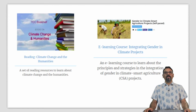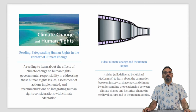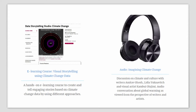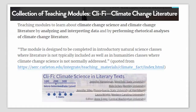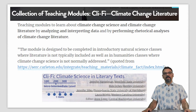Other tools include a short e-learning course on gender and climate change; a reading on human rights in the context of climate change specifying the effects of climate change on human rights, governmental responsibilities, actions, recommendations, and policies; a video about the connection between history, archaeology, and climate through understanding the relationship between climate change and historical change in medieval Europe; an e-learning course on visual storytelling through the use of climate change data; an audio podcast discussing climate change and culture with writers and visual artists; and many other tools.